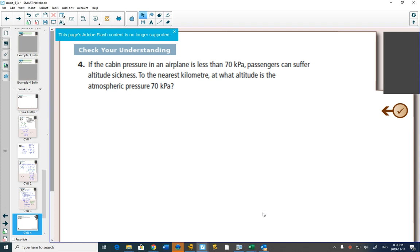So again, in this one, you would get the following formula. They would tell you that pressure is equal to 101.3 times 0.88 to the H.